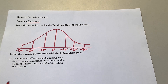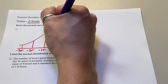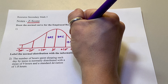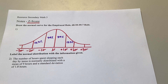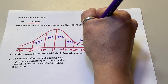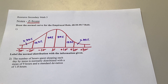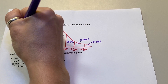Remember, the numbers on the axis will change based on the information you're given — your mean and standard deviation. But the percentages inside the normal curve never change, so we can just memorize those. The first two sections are 34% and 34%. The next sections are 13.5% and 13.5%. Then 2.35% on both sides, and the very last little section is 0.15% on each side.